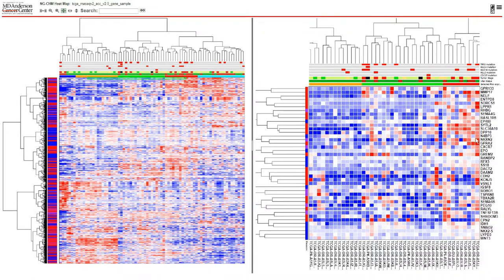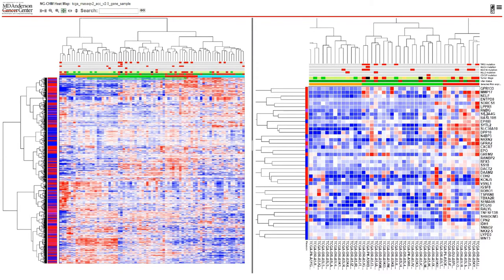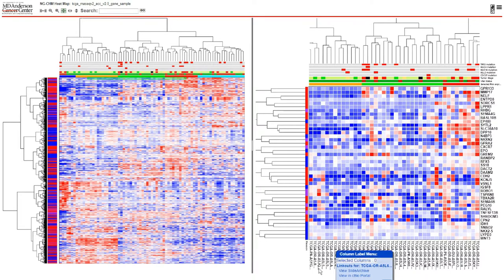The available menu entries depend on the type of data in the map. In this map, row labels are gene symbols, so the row label menu contains link outs to gene information. In contrast, the column labels are TCGA sample identifiers, so the column label menu contains link outs to information about TCGA samples.